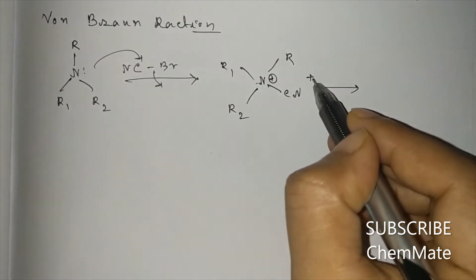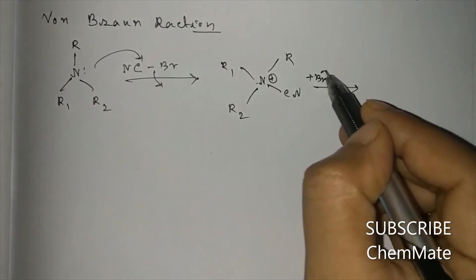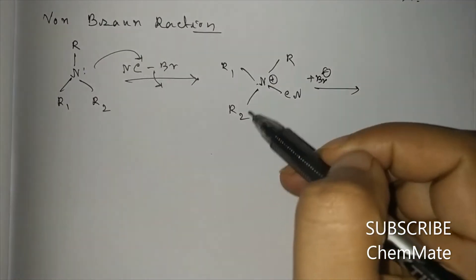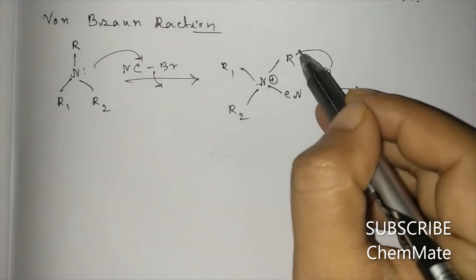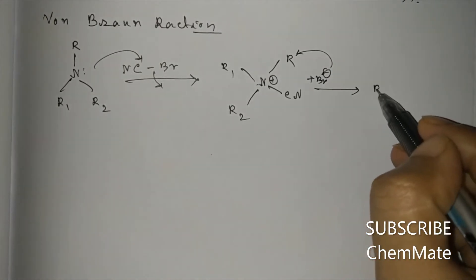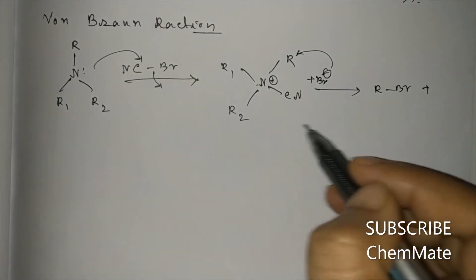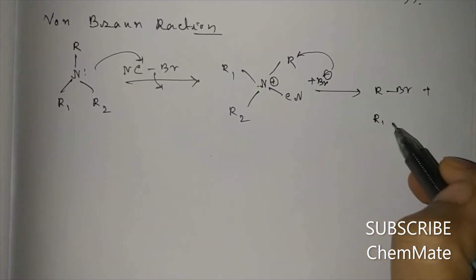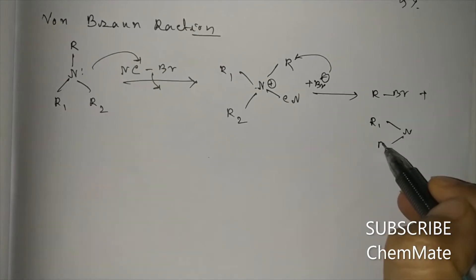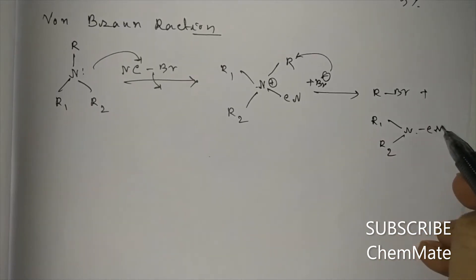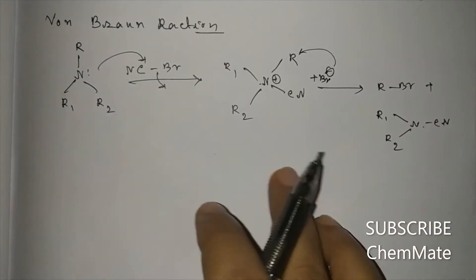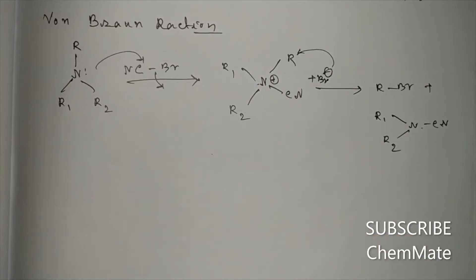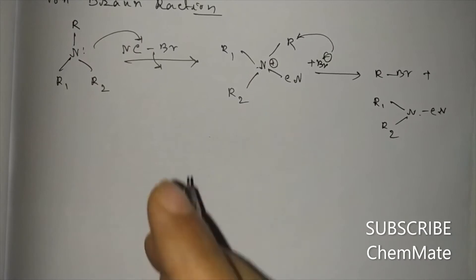The nitrogen attacks CNBr to form a quaternary ammonium intermediate plus Br minus. This Br minus will then attack one of the three alkyl groups, and an alkyl bromide will be formed plus a substituted cyanamide will be formed. This is the general reaction as well as the mechanism.